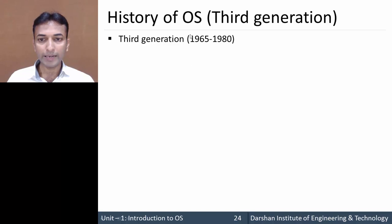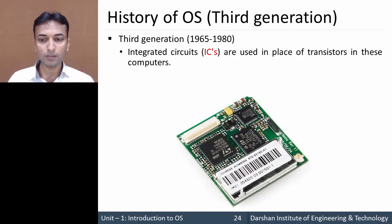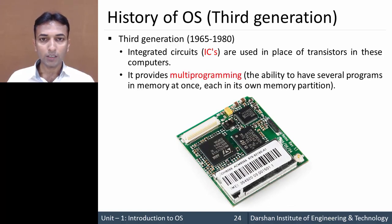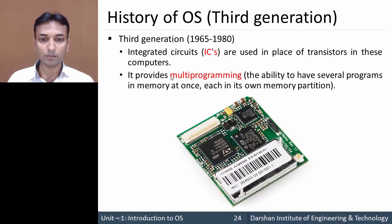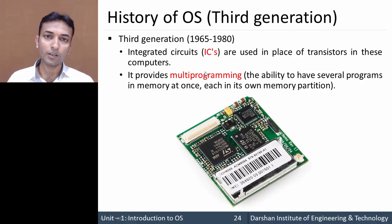Third generation, from 1965 to 1980. In this generation, ICs — integrated circuits — were used in place of transistors. The main concept introduced in the third generation is multiprogramming, which is the ability to have several programs in memory at the same time, each in its own memory portion. Computers developed in the third generation support multiprogramming.